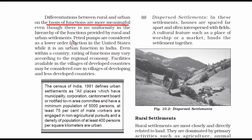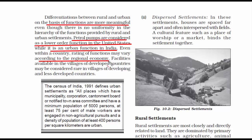Differentiation between rural and urban based on their functions is more meaningful than using population size or level of development. For example, petrol pumps are considered a lower-order function in the United States, while they are an urban function in India with very few petrol pump outlets in rural India. This shows that even the functions of rural and urban areas depend on regional economy. Facilities available in villages of developed countries may be considered rare in villages of developing countries.